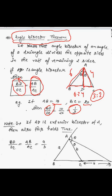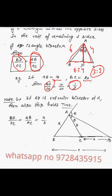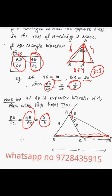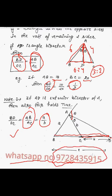This is the interior angle bisector theorem. It also applies to the exterior angle. The bisector of the interior angle A and the bisector of the exterior angle A both give the same property: BD:DC = AB:AC. You can see the application in questions.